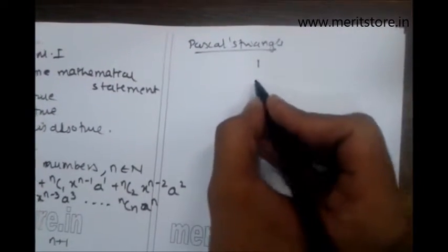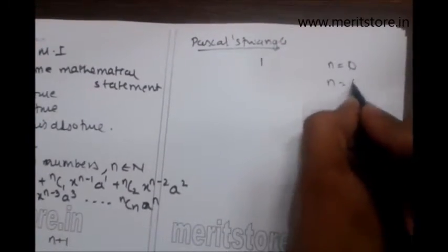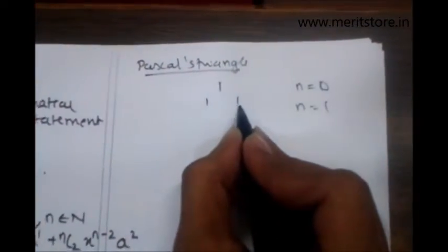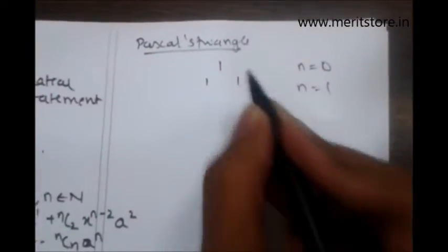For n as 1, the Pascal's triangle goes this way. I will write 1, 1 - that is coefficients being 1 and 1.